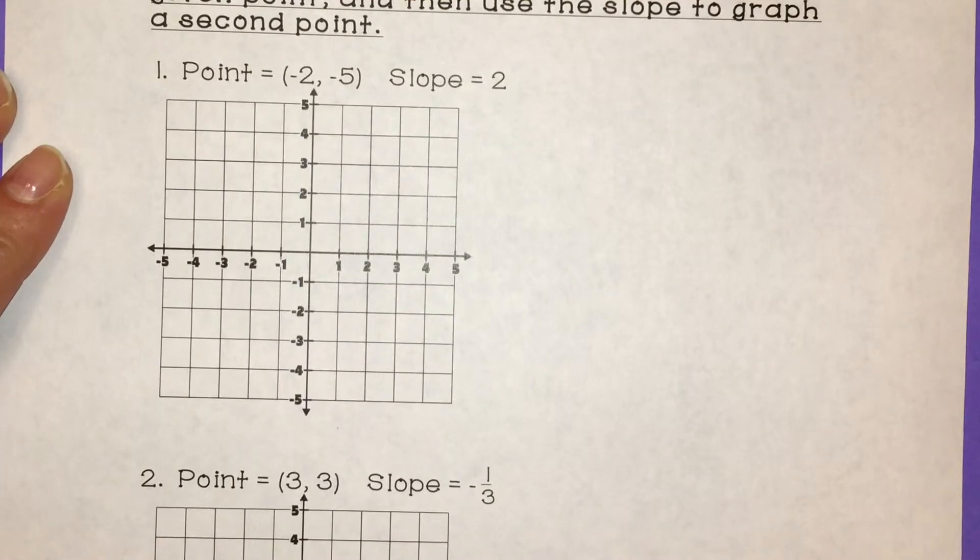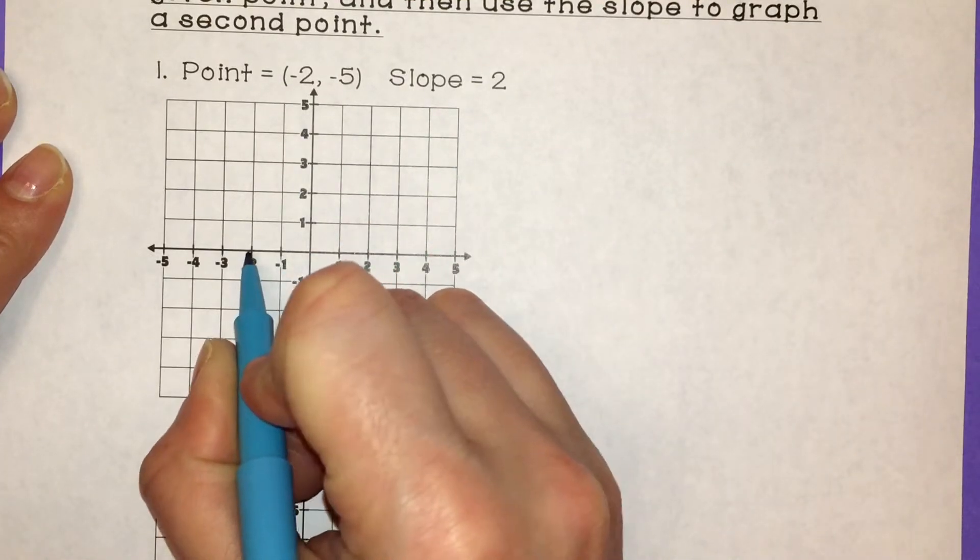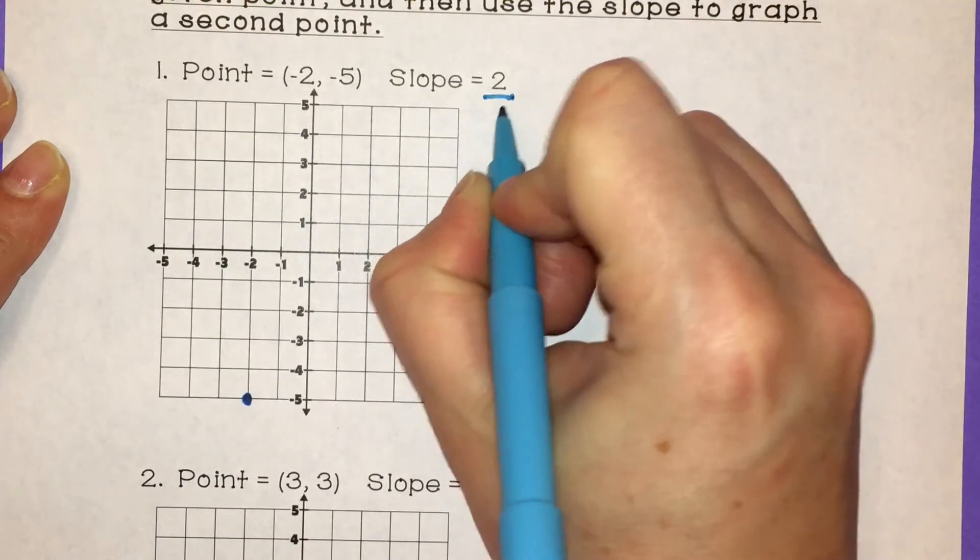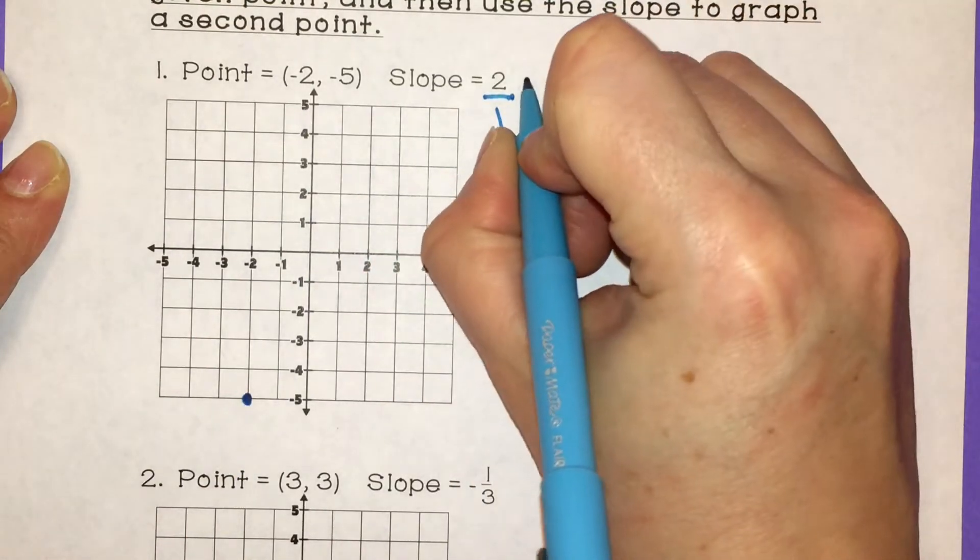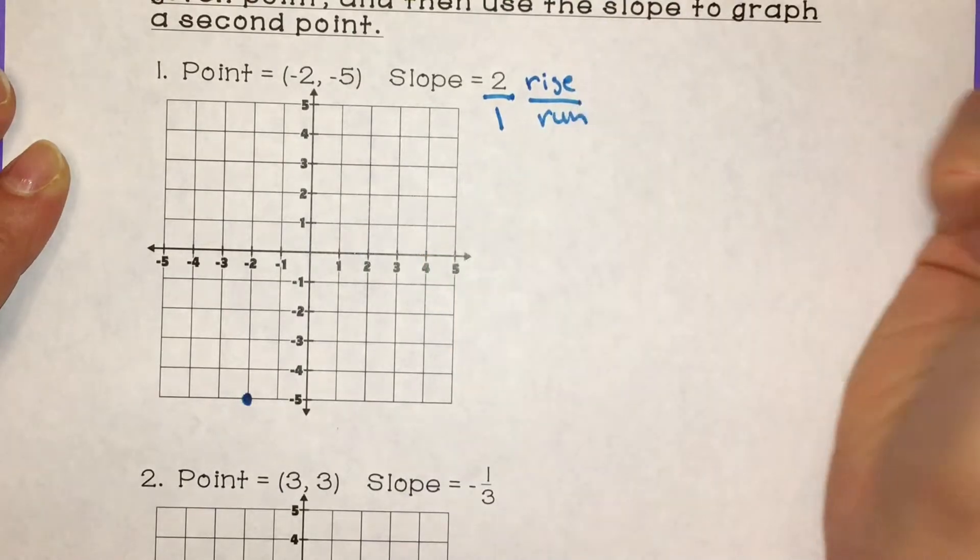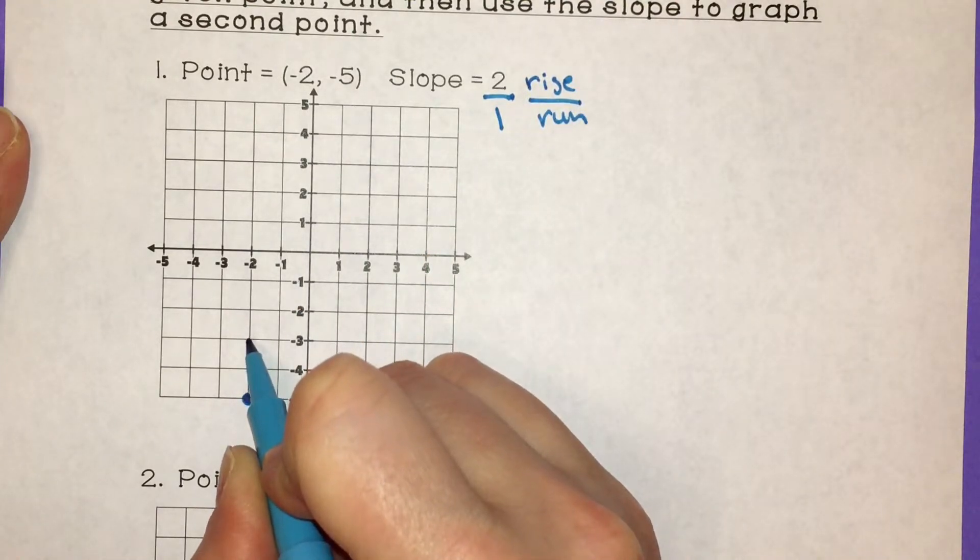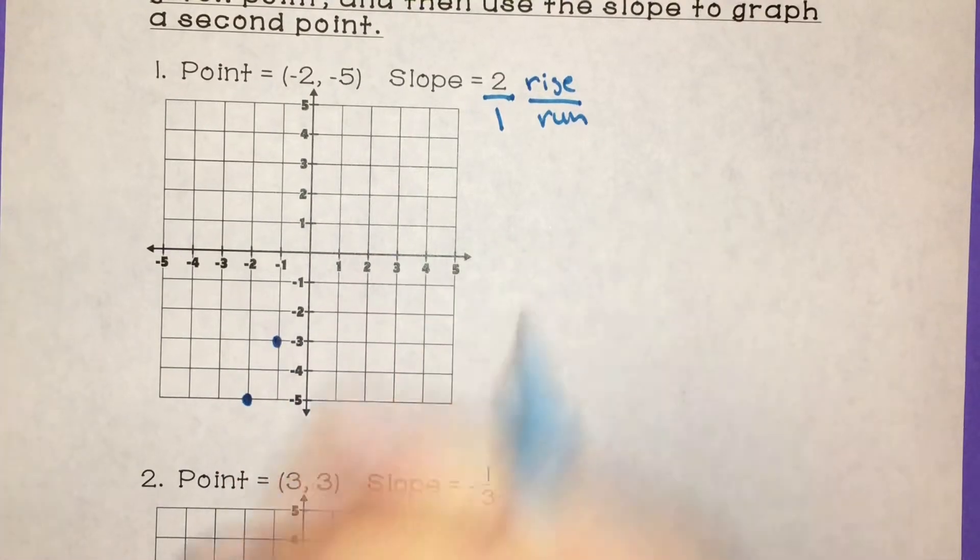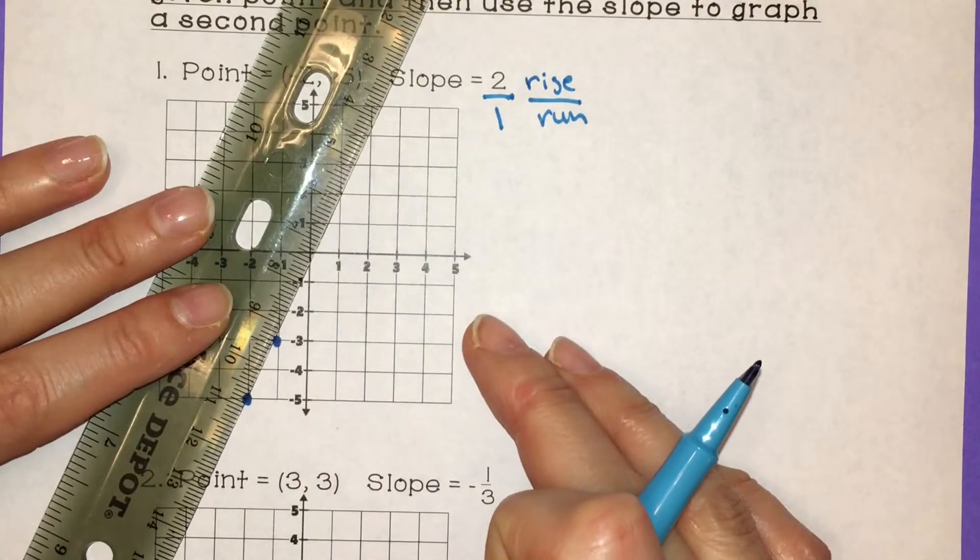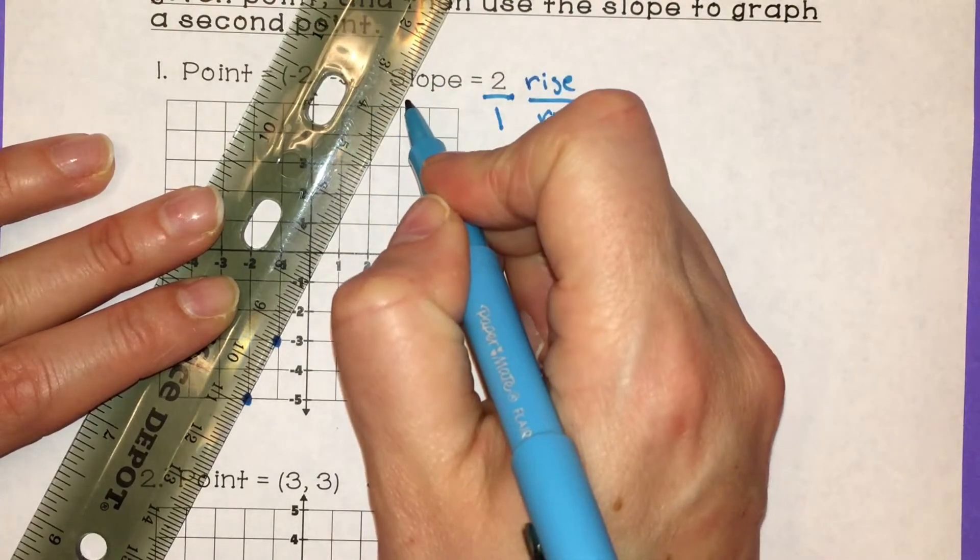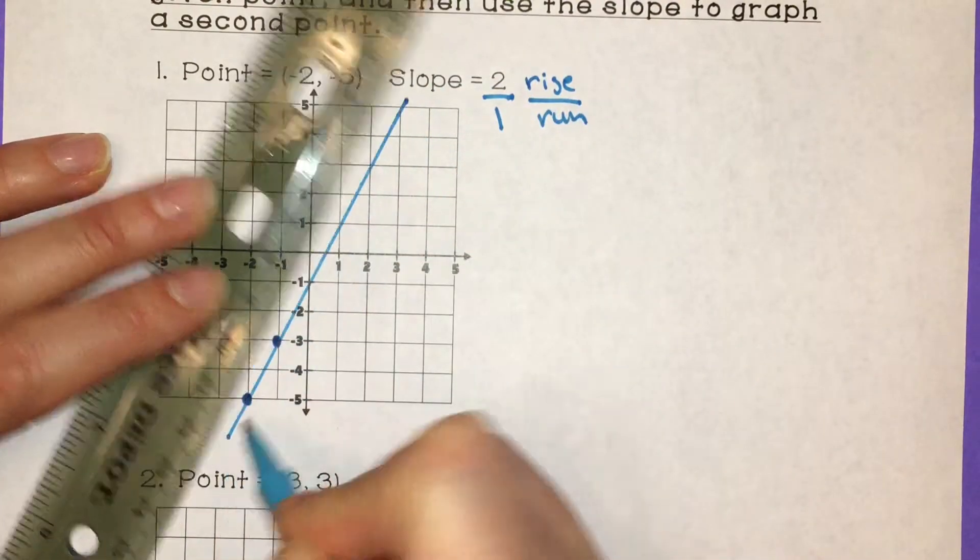All right, so first one. Negative 2, negative 5 is my first point. I'm going to make my slope into a fraction by putting a 1 below it. Now it's in rise over run form. So from my point, I'm going to rise 2, run 1 to the right. I'll connect those. And this is my graph.